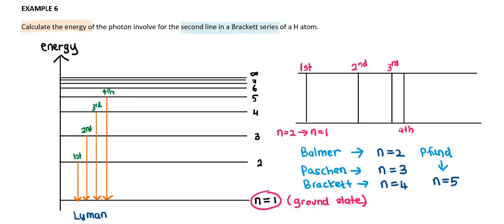This question mentions the formation of the second line in the Brackett series. We know that in the Brackett series, the electron falls to n equal to 4. The first line of the Brackett series is produced when the electron transitions from n equal to 5 to n equal to 4. So for the second line, the electron makes a transition from n equal to 6 to n equal to 4.